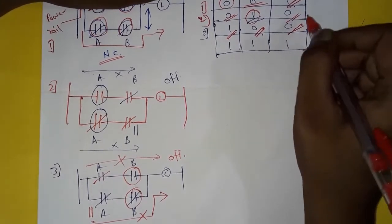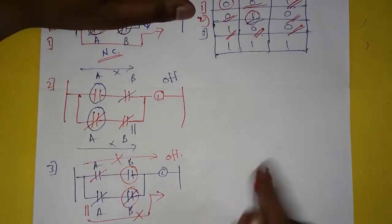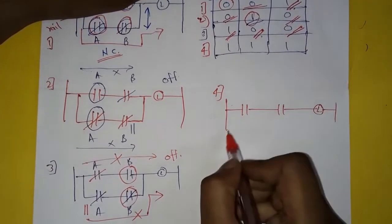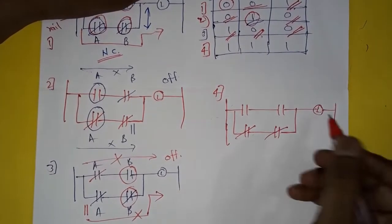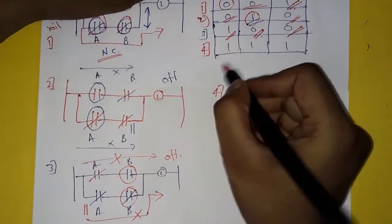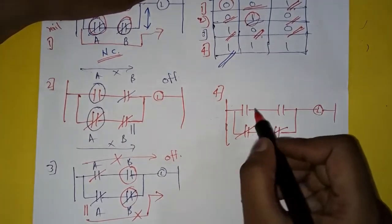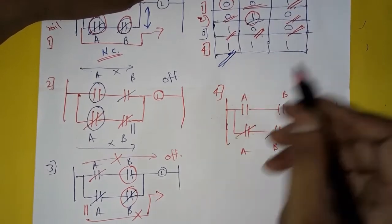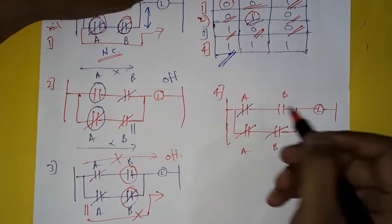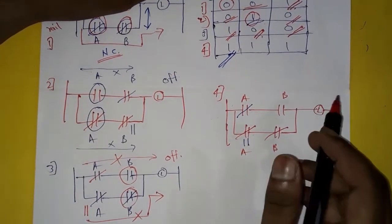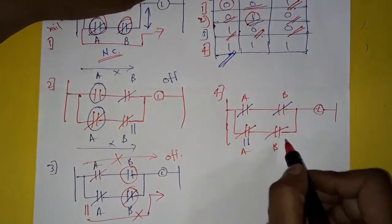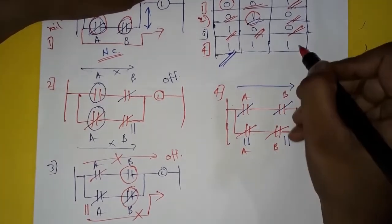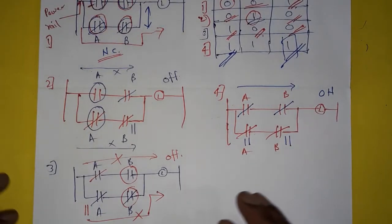Now the fourth condition. A is energized, so its contact gets closed here and its contact gets open here. B is also energized, so its contact gets closed here and its contact gets open here. In this case, the current will flow and the lamp will glow. So it is on in this condition, represented as 1.